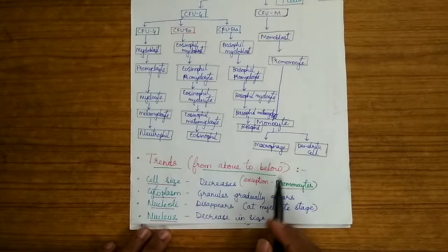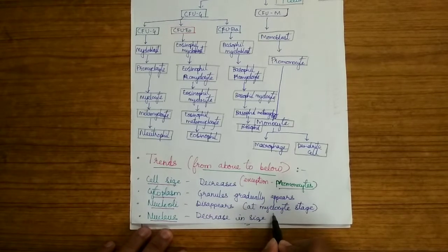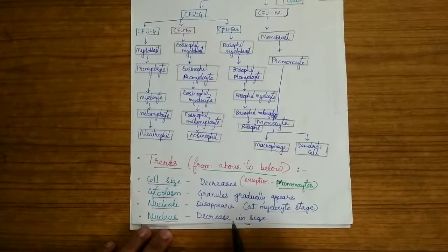The nucleolide disappears from above to below and it completely disappears at the myelocyte stage. The nucleus also decreases in size from above to below.